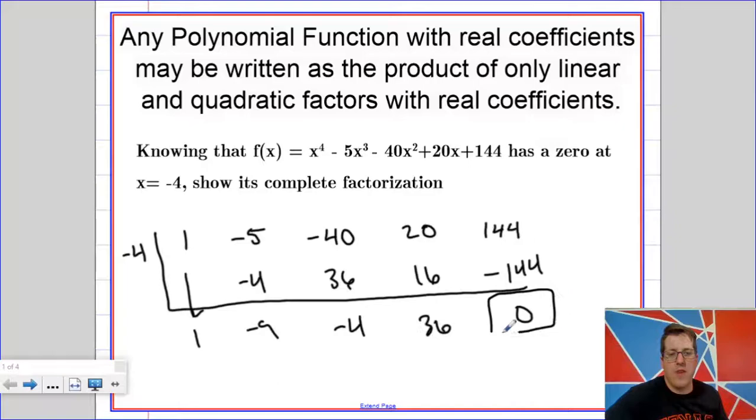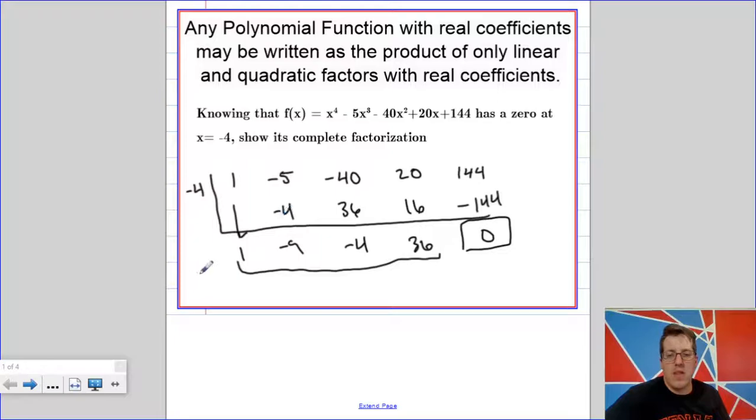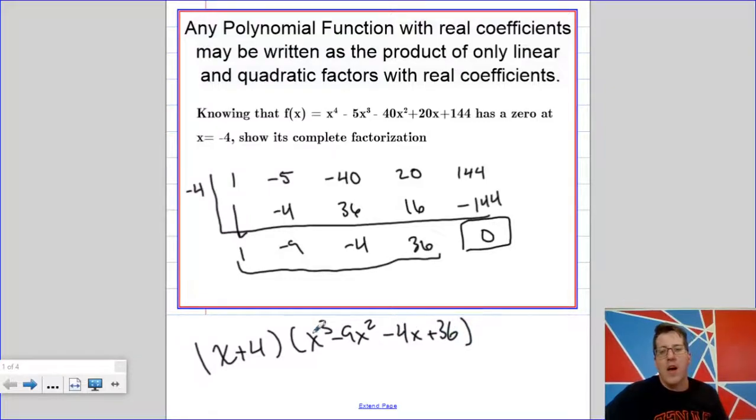Okay, so this does in fact have negative 4 as a zero, and remember this is the quotient. So that means that this factors to x plus 4 times x cubed minus 9x squared minus 4x plus 36 with a remainder of zero. I like this about synthetic division, that by looking at the quotient, I can see the next place I'm going to go.